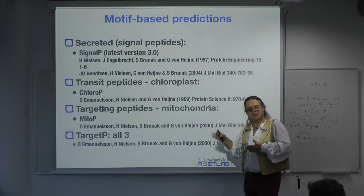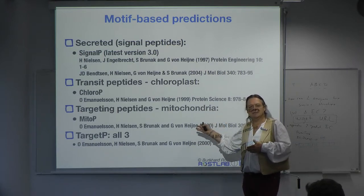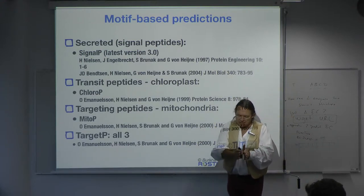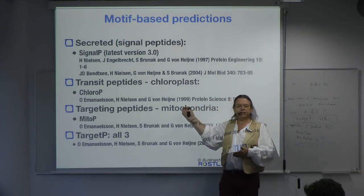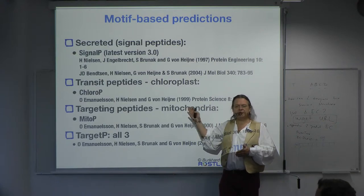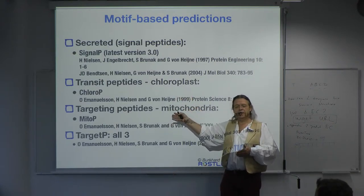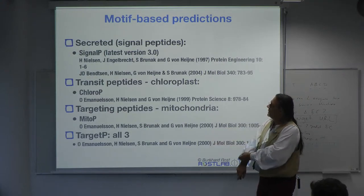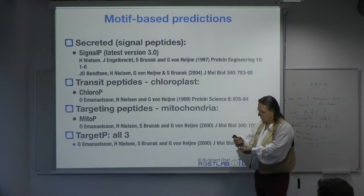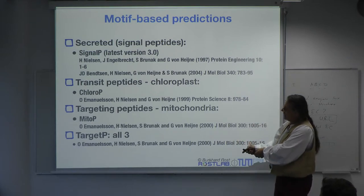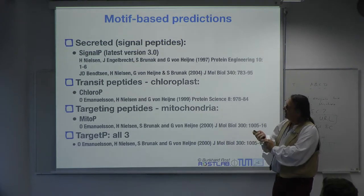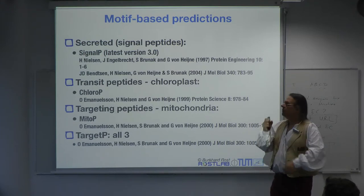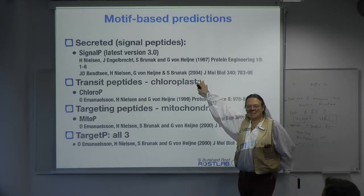All of these are essentially similar: something consecutive, at the beginning of the protein, and machine-learnable. All you need is a good data set — most of this work went into data collection, and Henrik Nielsen is behind that effort. TargetP is a combination of all three predictors, and as often happens, combinations are not always simple. If you are secreted it's clear you're not going to be in the chloroplast, but when the prediction says both chloroplast and signal peptide, how do you handle that?